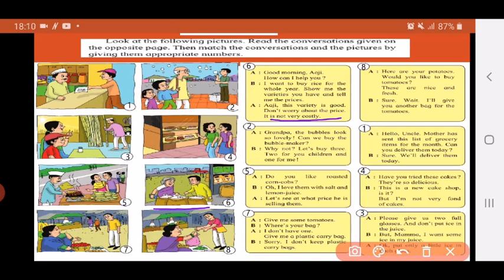Aji says, I want to buy rice for the whole year. Show me the varieties you have and tell me the prices. So aji has come to select some rice from this shop, so she's asking the shopkeeper to show her all the different kinds of rice he has and also the price or the cost of the rice.